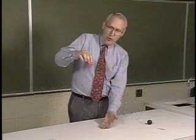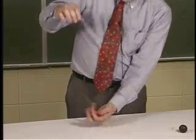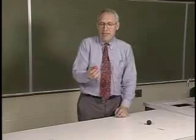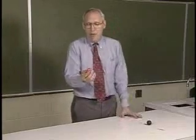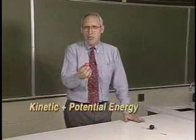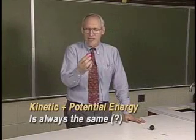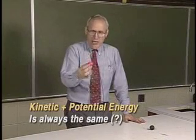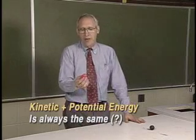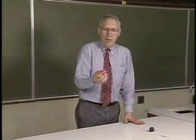If you let the object go, that gravitational potential energy becomes kinetic energy. Our idea is that the sum of those two — the kinetic energy and the gravitational potential energy — is a conserved quantity. The sum is the same at the beginning, during, and after a certain amount of motion.